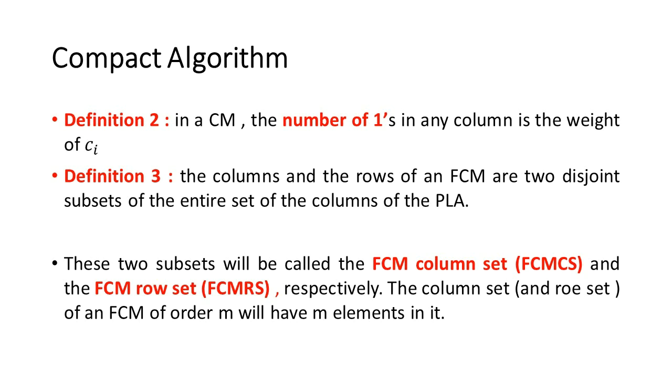Definition 3: The columns and the rows of an FCM are two disjoint subsets of the entire set of columns of the PLA. These two subsets will be called the FCM column set (FCM CS) and the FCM row set (FCM RS), respectively. The column set and row set of an FCM of order m will have m elements in it.